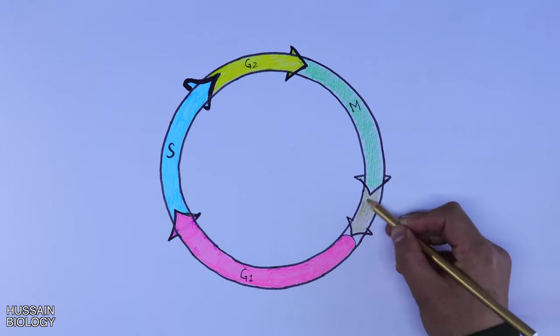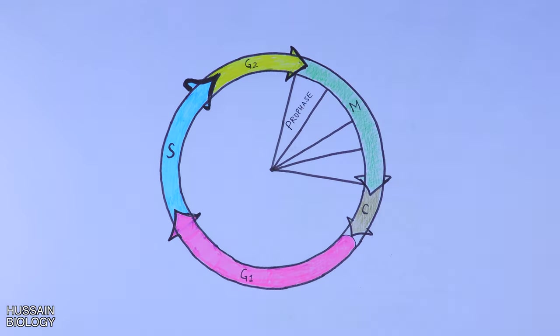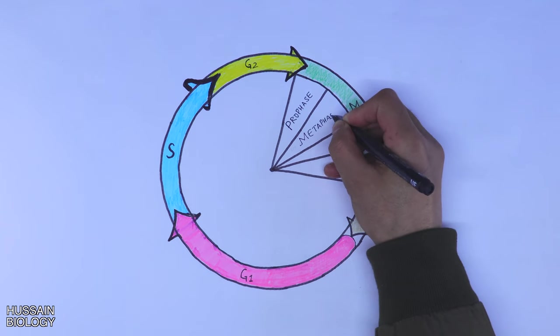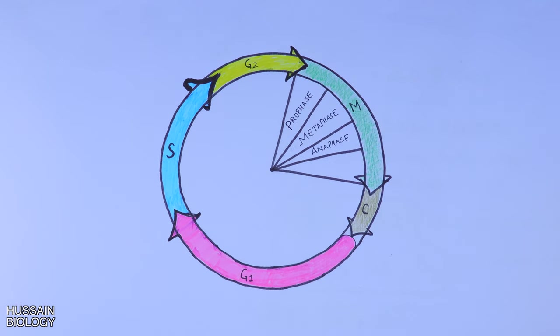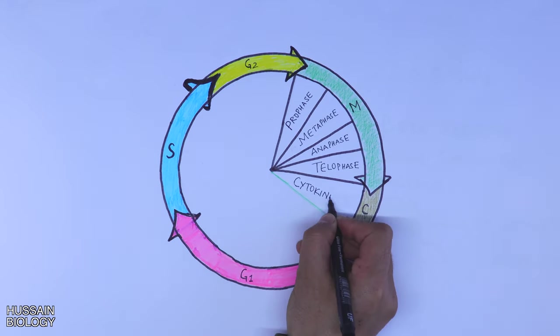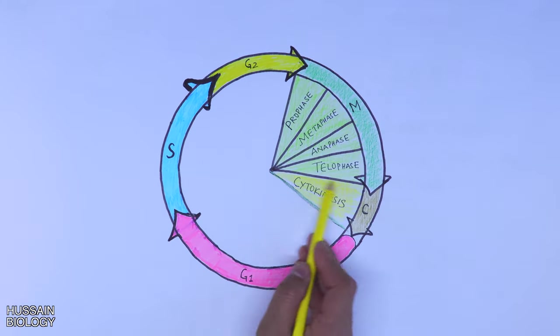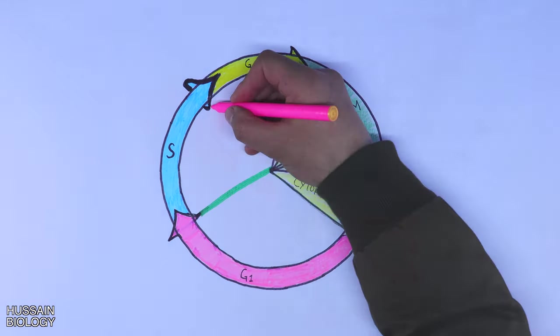First of all, let's divide the mitotic phases. In the mitosis we have: first phase is prophase, second is metaphase, third is anaphase, and fourth one is telophase. After that, the cell divides completely in the process of cytokinesis, which is actually not part of mitosis.